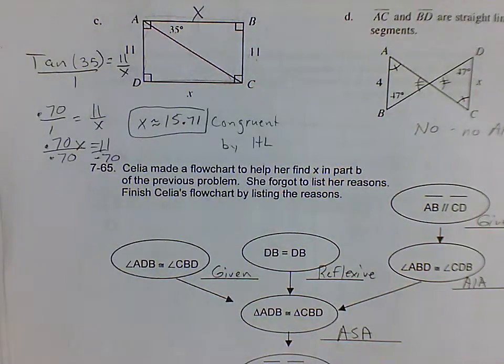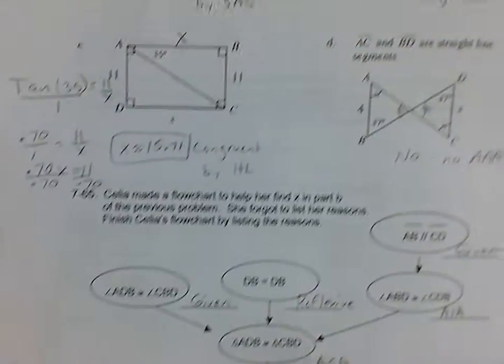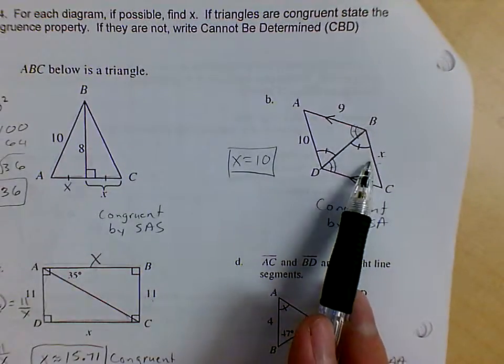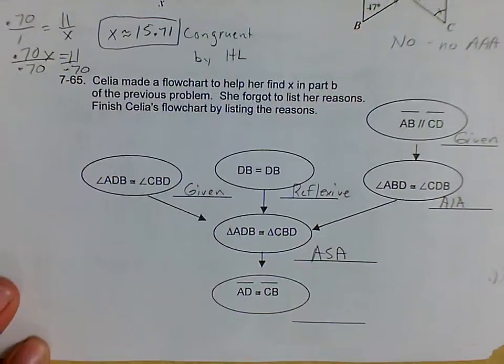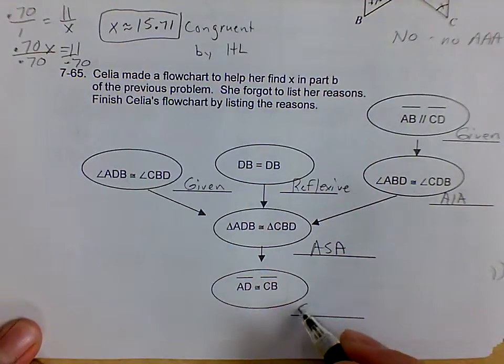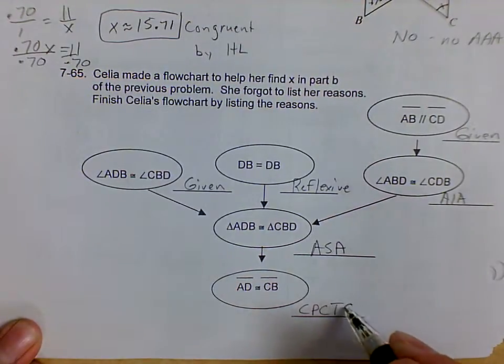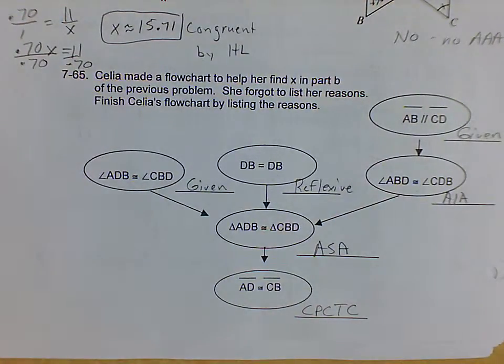And then the last thing, how do we know that AD is going to be congruent to CB? Because remember, we know that X equals 10. So how do we know those are congruent? So we need CPCTC. Our corresponding parts of congruent triangles are congruent.